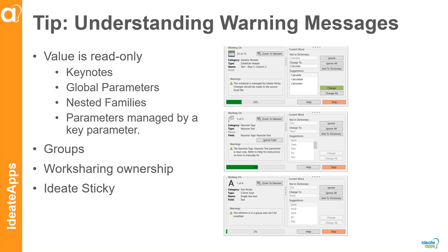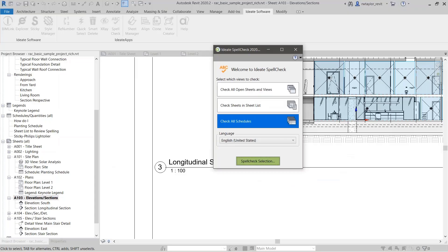We have a number of warning messages — these are not necessarily errors, they're warnings. Most of them occur because it can't make a change, meaning the value you're trying to spell check is read-only. It could be a keynote, something in a group, driven by a global parameter, within a nested family, a parameter managed by a key parameter, locked by work sharing, or coming from Sticky.